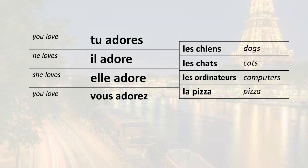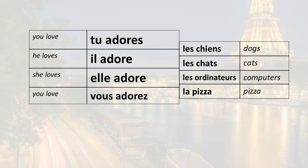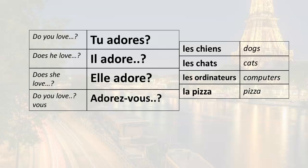Now the other very common way of asking a question is to leave the word order as it is, capitalize, and put a question mark at the end. So tu adore becomes tu adore?